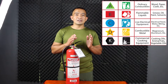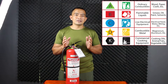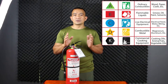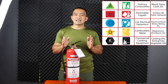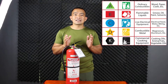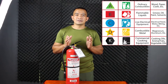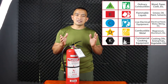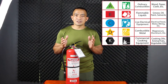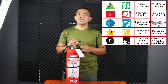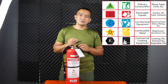Class B refers to flammable liquid fires — for example, fuel, kerosene, and solvents. Class C fire is electrical fire involving materials that are live or have electricity. Class D refers to metal fires, such as aluminum, magnesium, and so on.